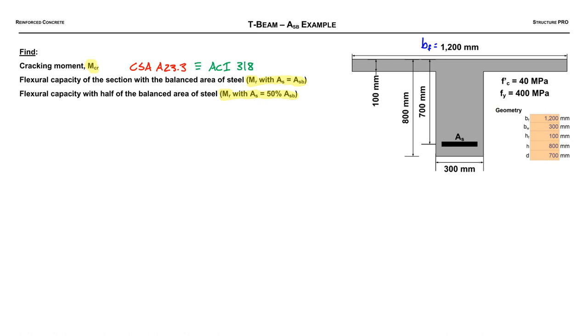Alright, so first things first. Let's go ahead and label a few of these geometrical things we got going on here. So we got the width of our flange BF, the height of our flange, and we got our web, and I'll just summarize these different geometry things in this little table here. If we're finding the cracking moment, we need to know which way that moment is being applied. So it's a T-beam, so the point of a T-beam is to have compression in the flange and tension in the bottom.